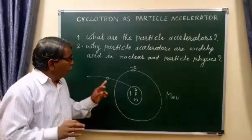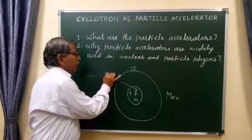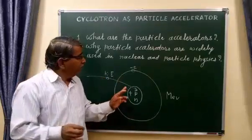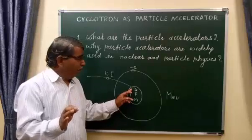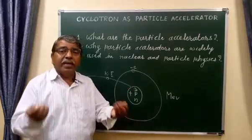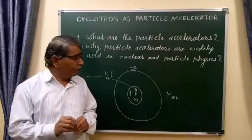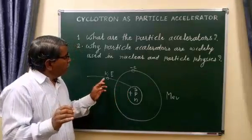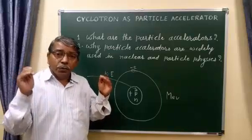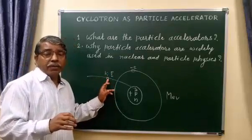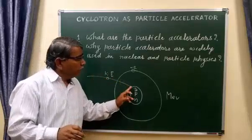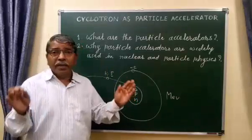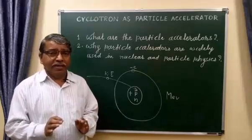So it is very essential to increase the kinetic energy of the charged particle, so that the particle having more kinetic energy can cross the potential barrier of the nucleus, enter into the nucleus, and retrieve information about it. Particle accelerators play a very important role — they are used for increasing the kinetic energy of the charged particle so that it can cross the potential barrier and enter the nucleus. That is why particle accelerators are widely used in nuclear and particle physics.